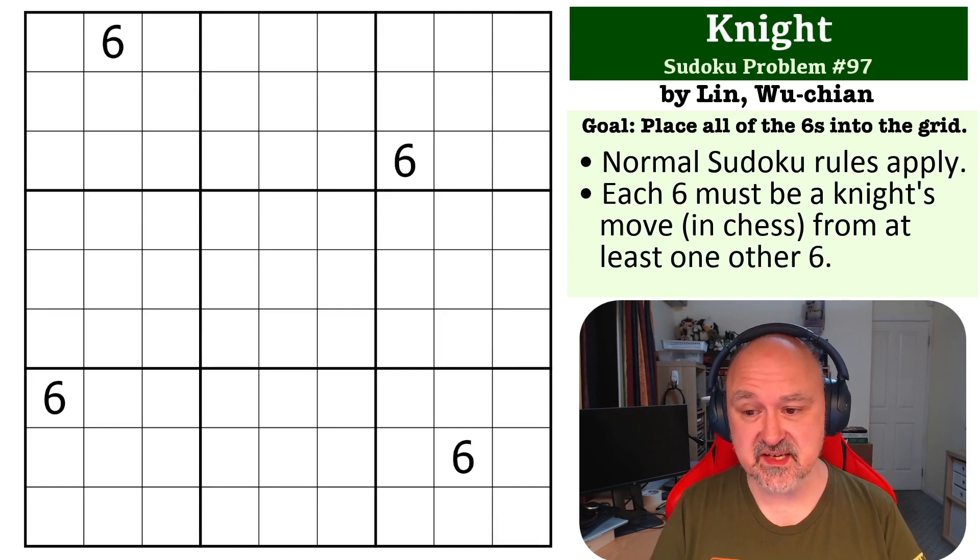But it was kind of cool to see. So the way this one works is each six in the grid must see at least one other six by knight's move. And yeah, that's it.